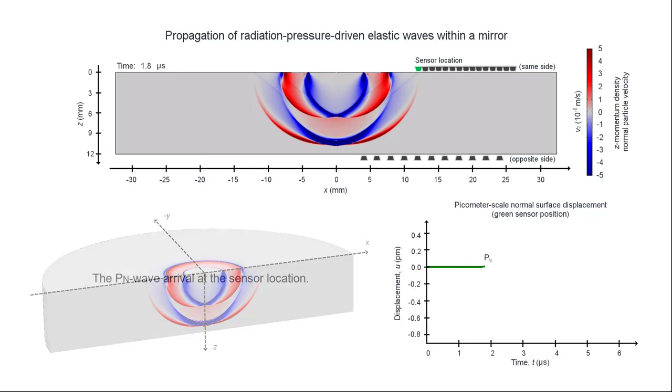At this instant in time, the waveform feature corresponds to the arrival of the primary wave generated on the nearer edge of the illuminated area.